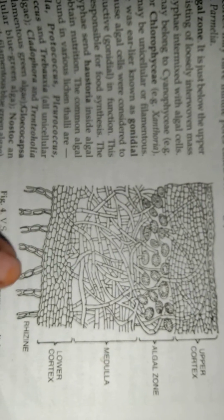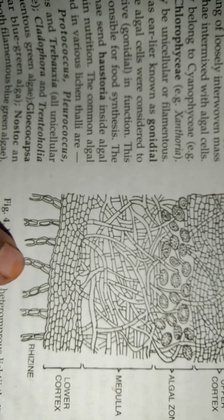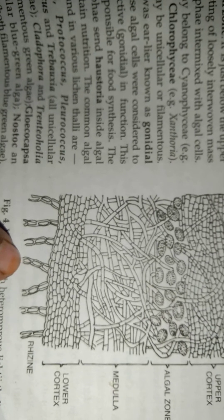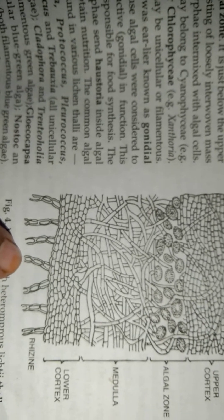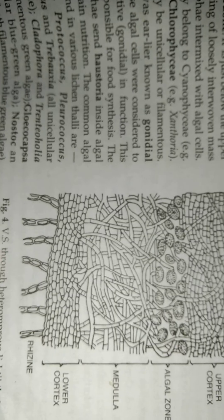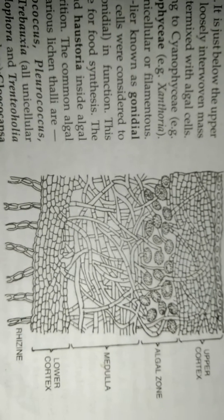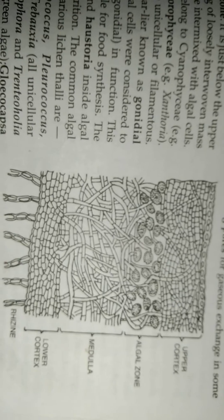Then the lower epidermis, below rhizoids. These are the multicellular outgrowth of the hyphae which help in attachment and anchorage. These are the rhizoids, they are in many numbers.